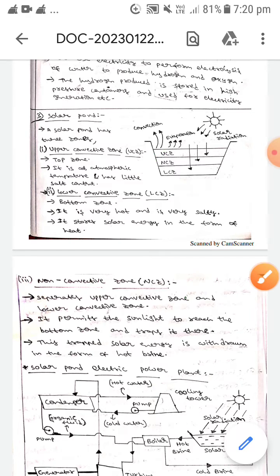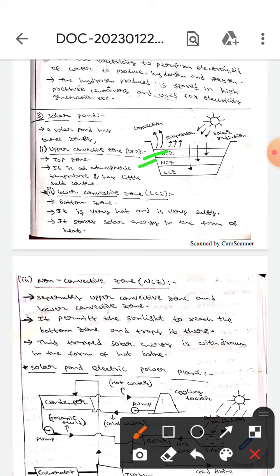Let's first discuss about upper convective zone. Here it is the top zone. It is atmospheric temperature and has little salt content.